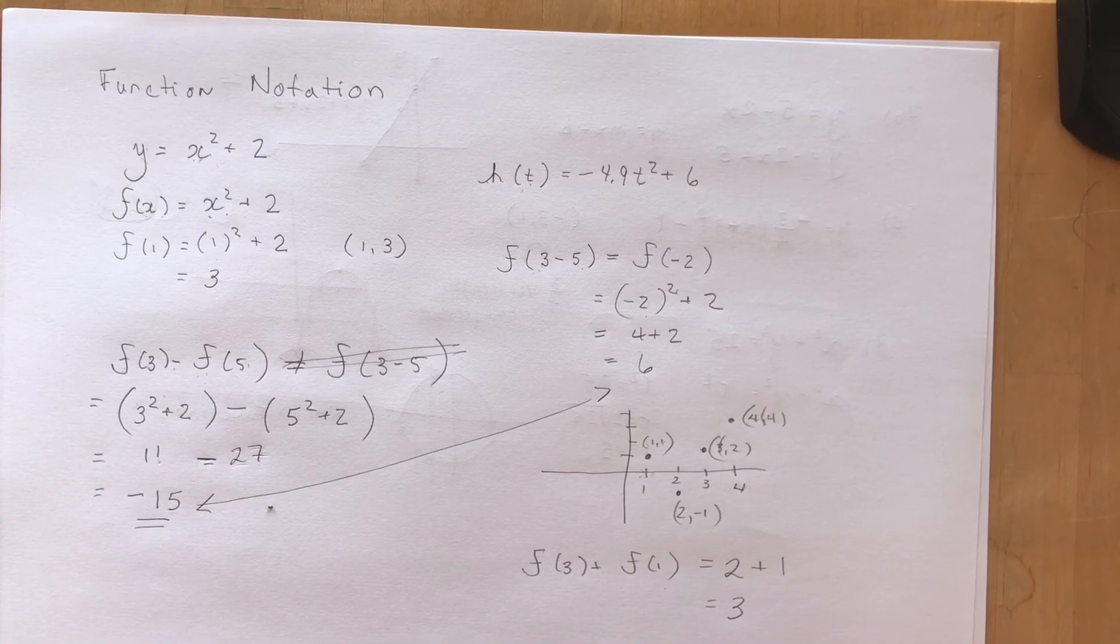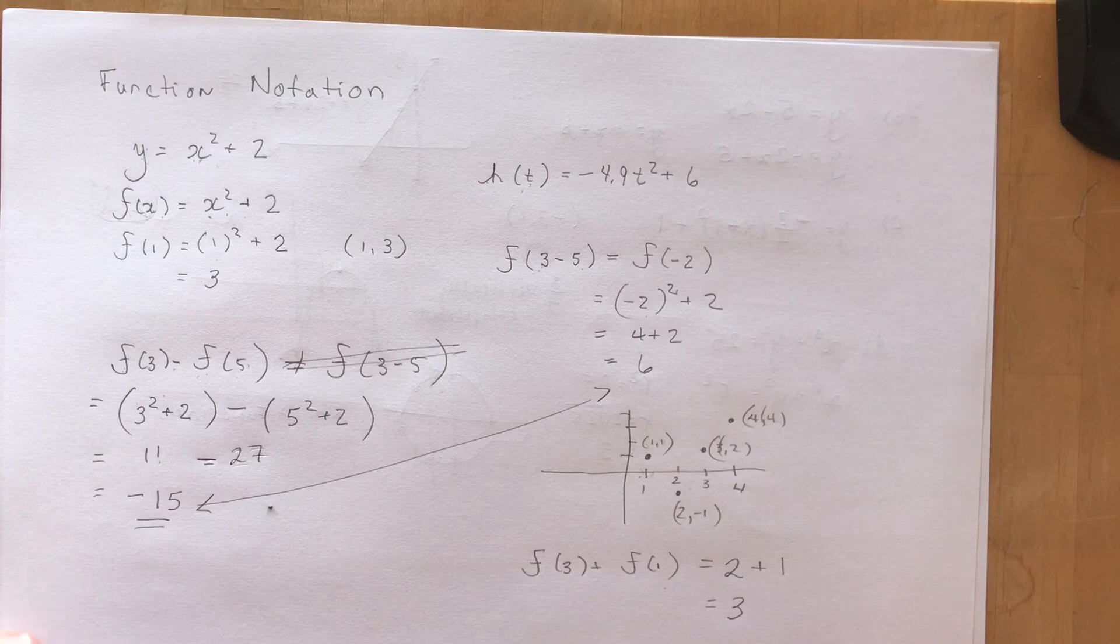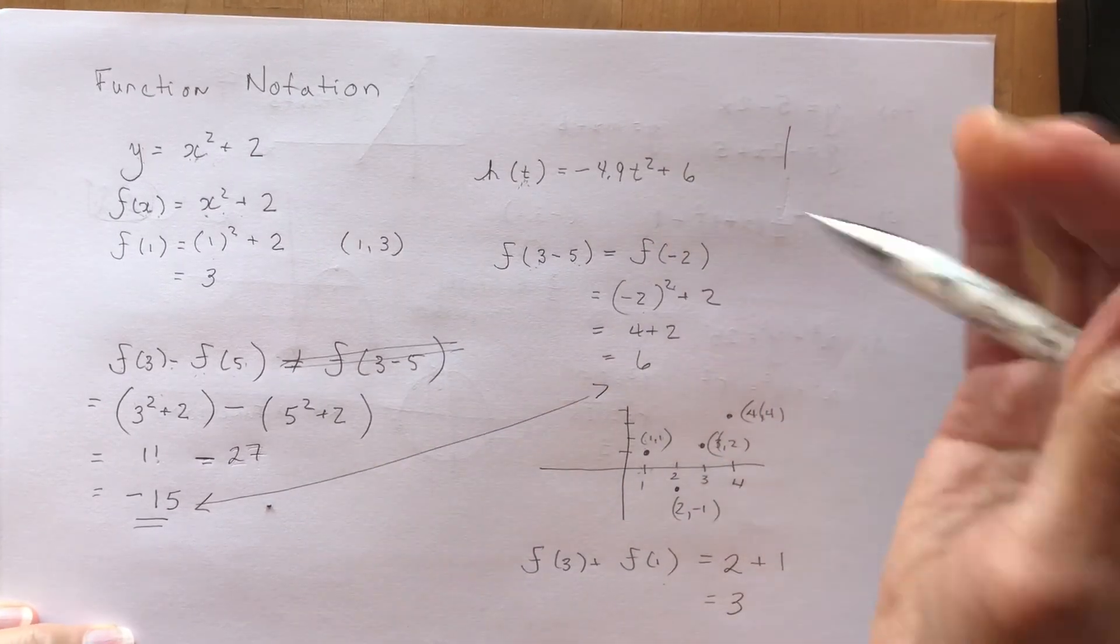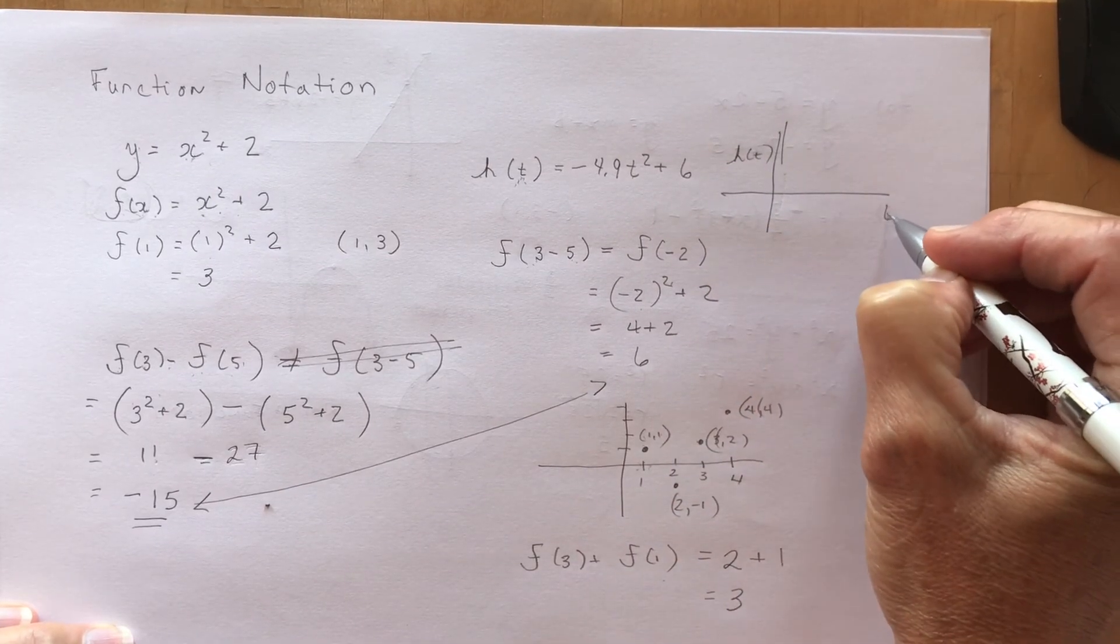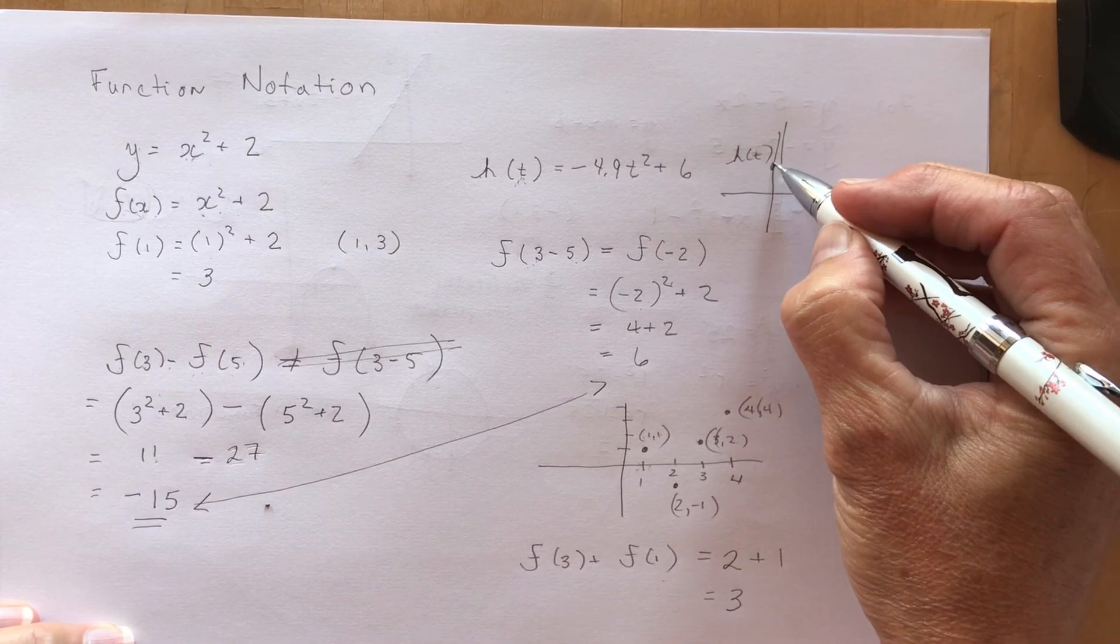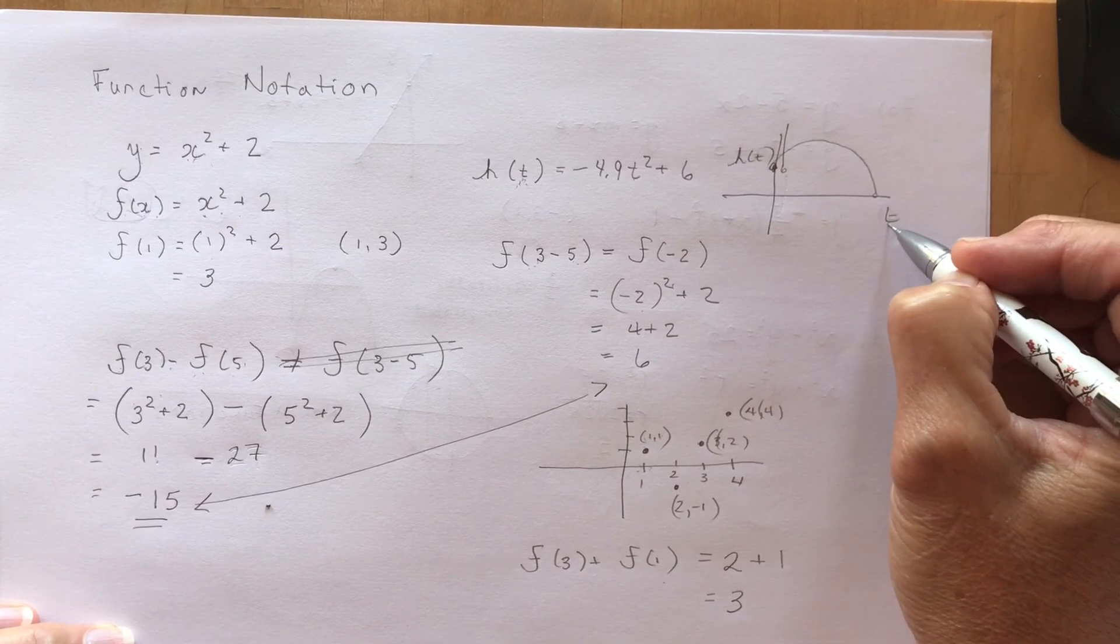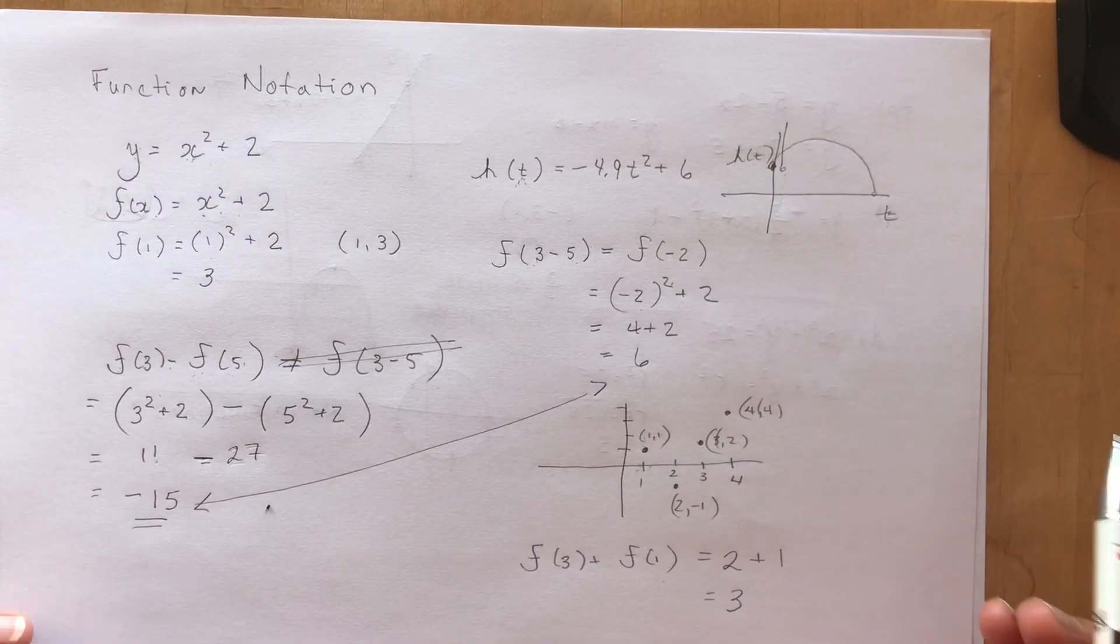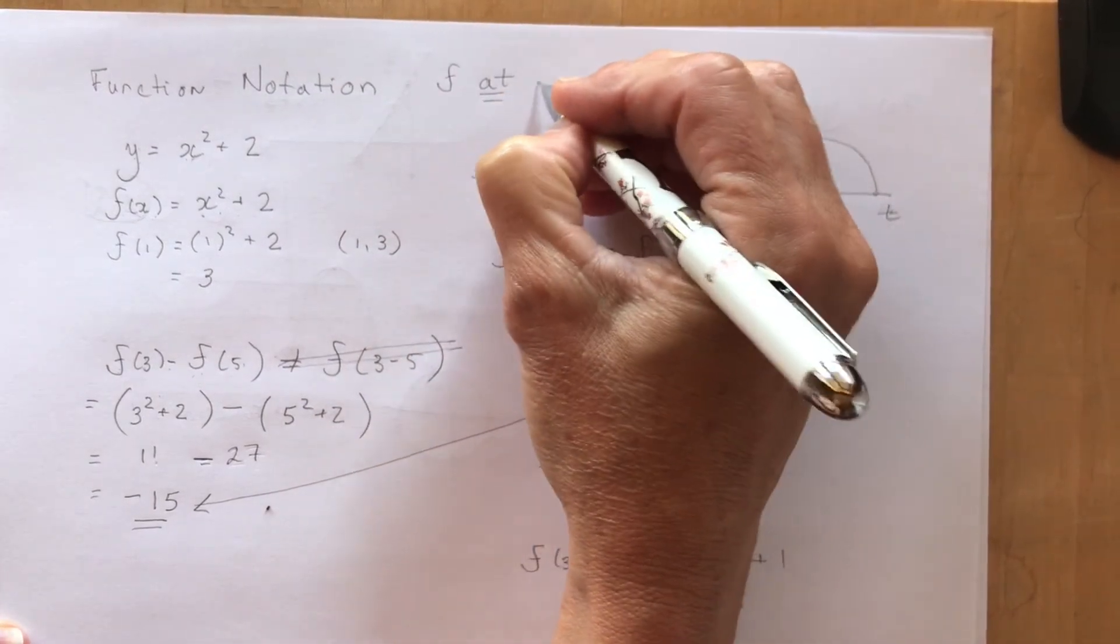So that's all there really is to function notation. It's just another way of replacing y in an equation so that you can say what variable for your domain you're going to be using. If I was to graph this I would have h at t on this axis and this would be t. f at x, that's probably the one you'll see the most, and it is said f at x.